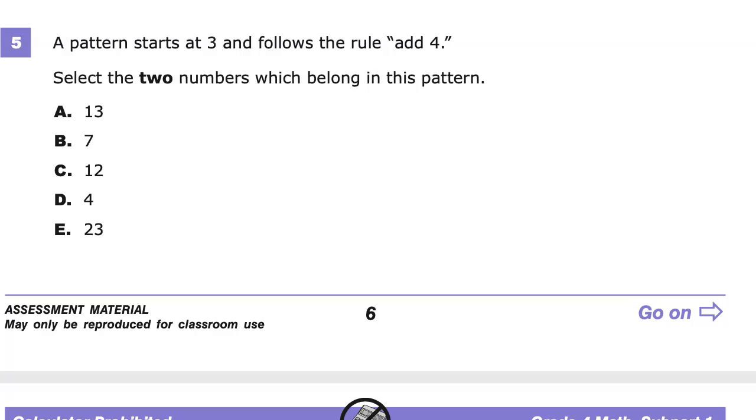Today we are looking at the grade four practice test for the Tennessee Ready exam. We're going to be looking at question number five on this specific test. The question says a pattern starts at three and follows the rule add four. Select the two numbers which belong in this pattern.